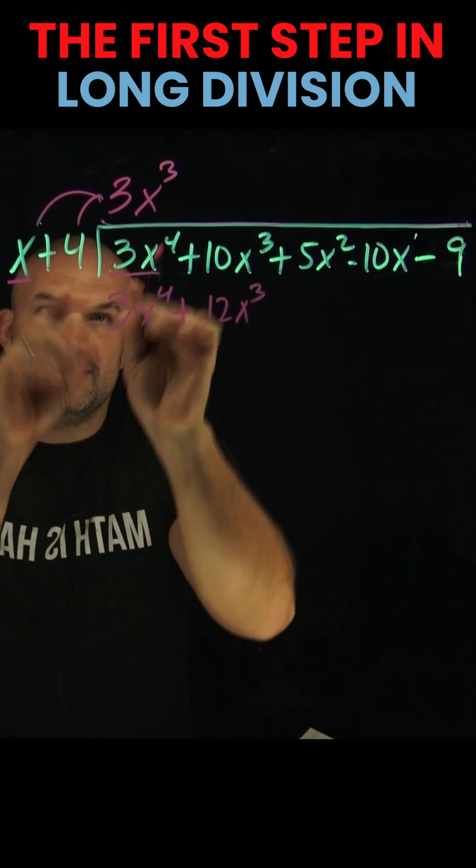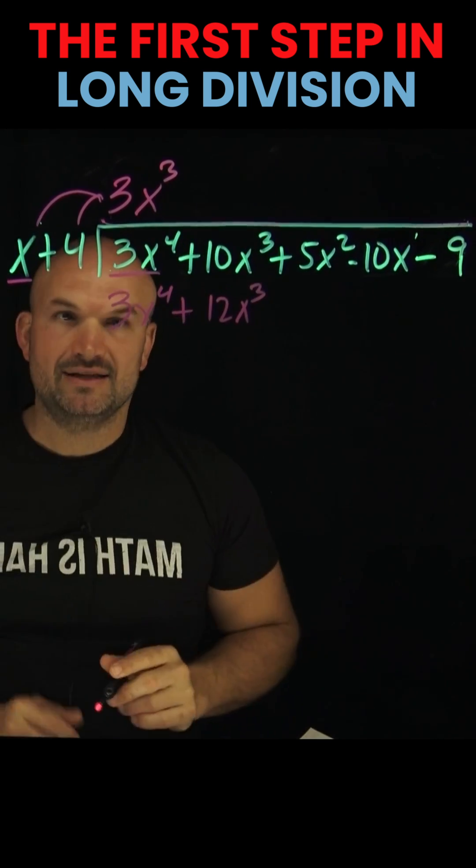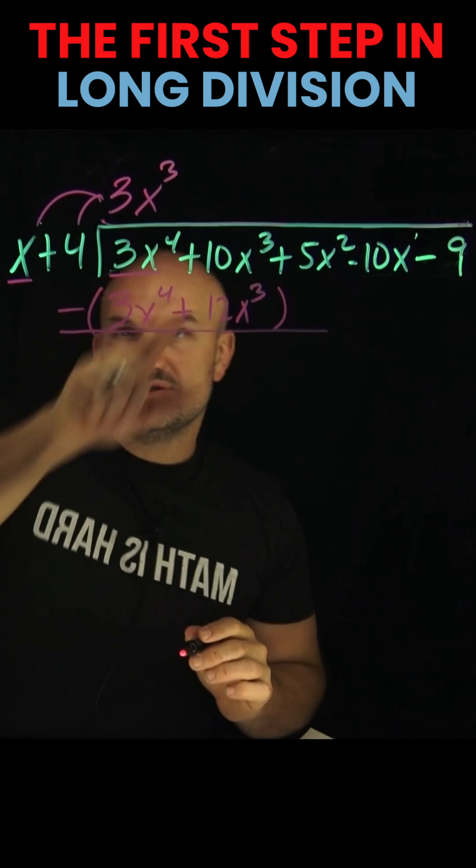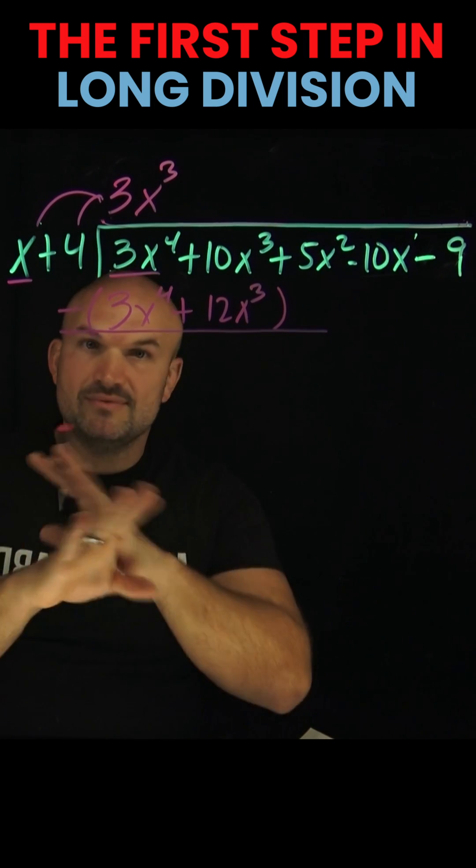If you did your math right, the first two terms should be exactly the same. Now we're going to subtract our rows. So 3x to the fourth minus 3x to the fourth goes to zero, so we don't need to write it.